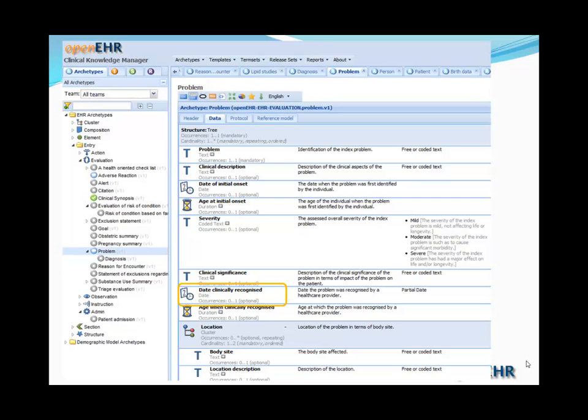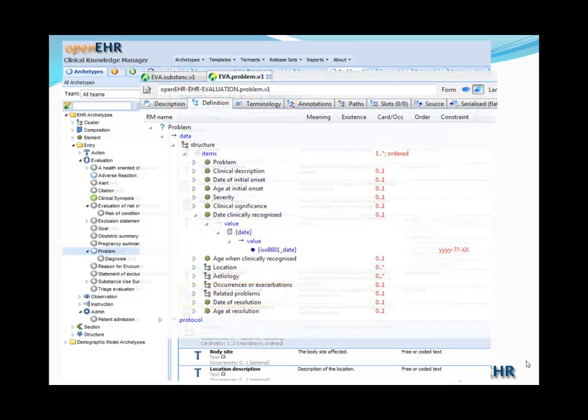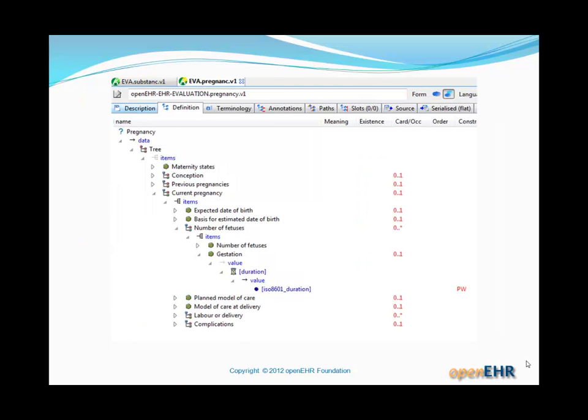So those constraints allow us to do things like define useful fields in archetypes. So this is the problem archetype from OpenEHR, and you can see a number of date fields. There's one there, Date Clinically Recognized. And the way that's done in ADL is using exactly one of those examples we saw before. So the actual terminal date value in the archetype is constrained by YYYY-?M-XX. So no day and month, an optional month, and a year. There's another example for gestation duration to be expressed in weeks.